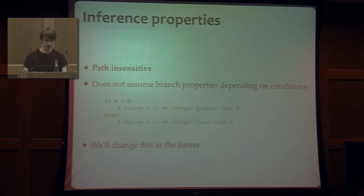And also, it is path insensitive in the sense that we don't assume branch conditions. As it is in this example where I have an integer x, which is in an if branch greater than zero. And Astroid doesn't assume this information right now or the opposite in the else statement. But that's going to be changed later on.